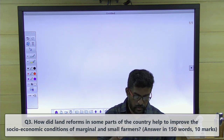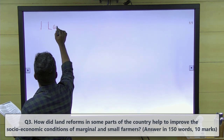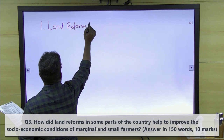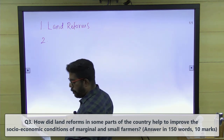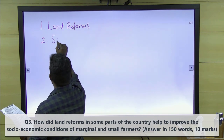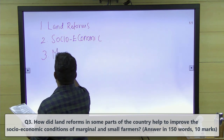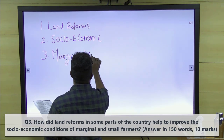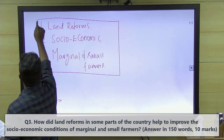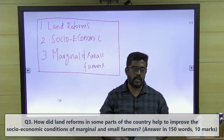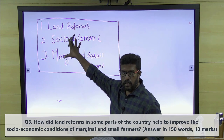What are the key words we should give importance to in this question? We have to structure our answer based on these words. First, land reforms — and it's clearly stated it's in some parts of the country. So the understanding we should have is: not in the entire country, but in some parts of the country it became successful. Then, how it improved the socio-economic conditions of marginal and small farmers. It's a 10-mark question, so 5 or 6 points should be used to structure the answer.